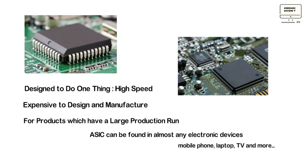Modern ASICs generally include a 32-bit microprocessor, memory blocks, network circuits, etc. This type of ASIC is known as a System on a Chip. A disadvantage of this circuit is that it can be more expensive to design and manufacture, particularly if only a few units are needed. So these types of integrated circuits are preferred only for products which have a large production volume.